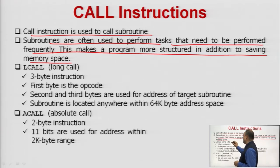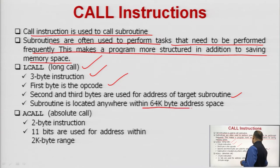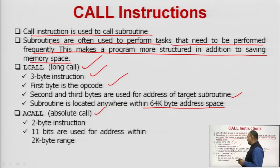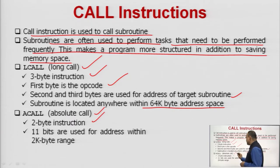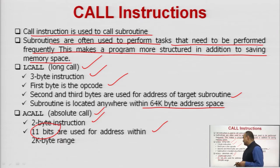An example of a call instruction is LCALL, that is the long call instruction. It is a 3-byte instruction. The first byte is the operation code. The second and third bytes are used for the address of the target subroutine. The subroutine can be located anywhere within 64 kilobytes of address space. Next is ACALL, the absolute call instruction, which is a 2-byte instruction. The 11 bits are used for an address within a 2-kilobyte range.